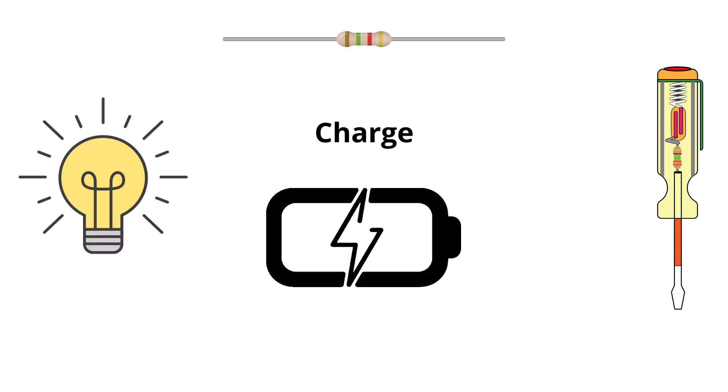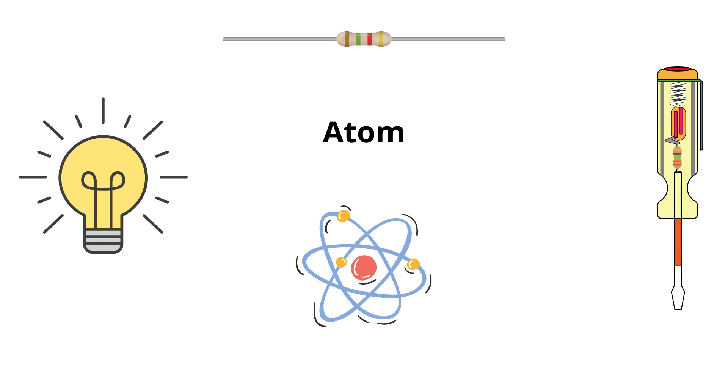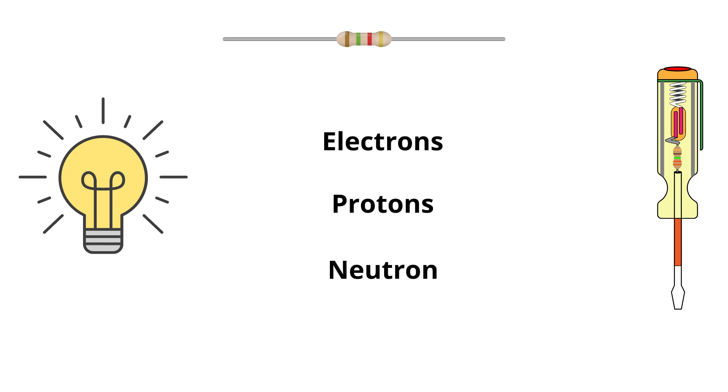Well to answer that we have to understand the concept of charge. So each substance in this universe is made of atoms, be it the pen that you write with, the air that you breathe or the water that you drink. Now an atom comprises of certain particles, namely electrons, protons and neutrons.